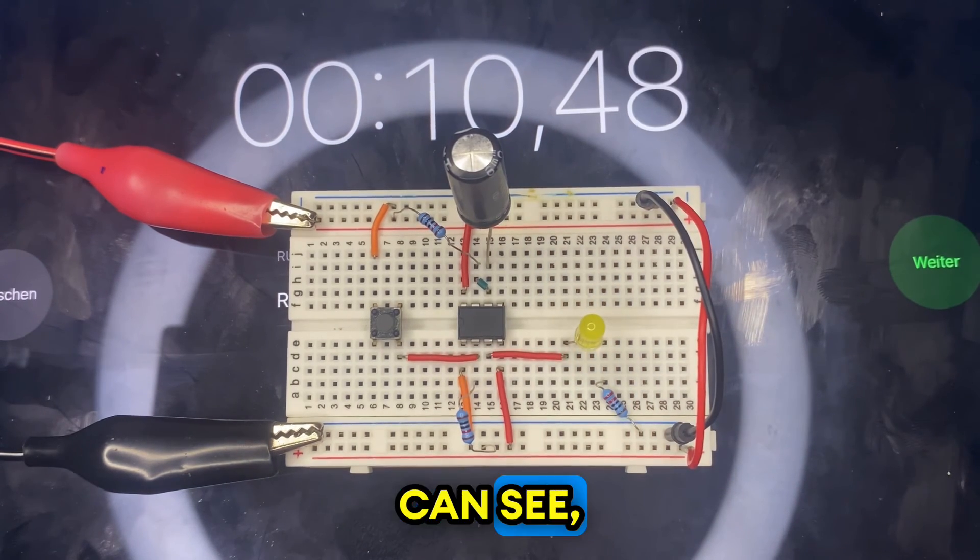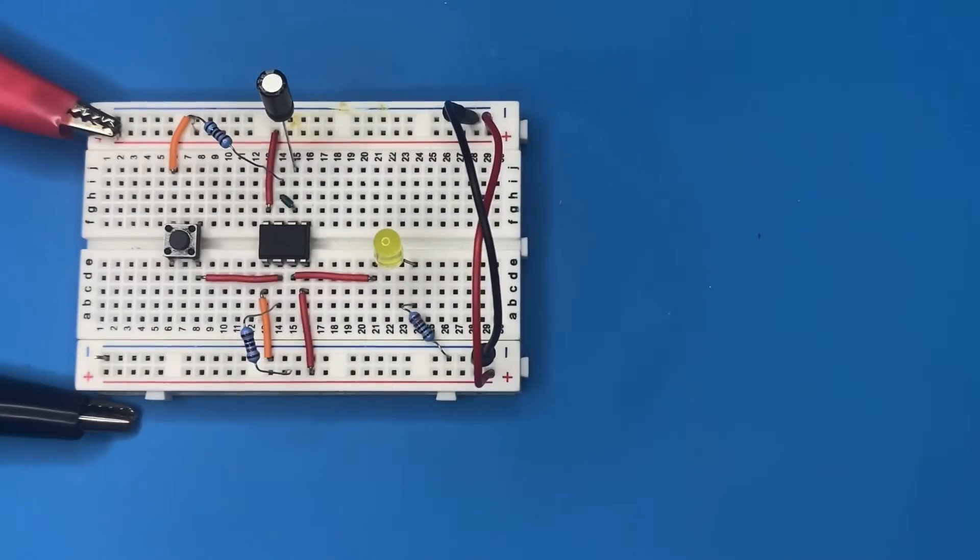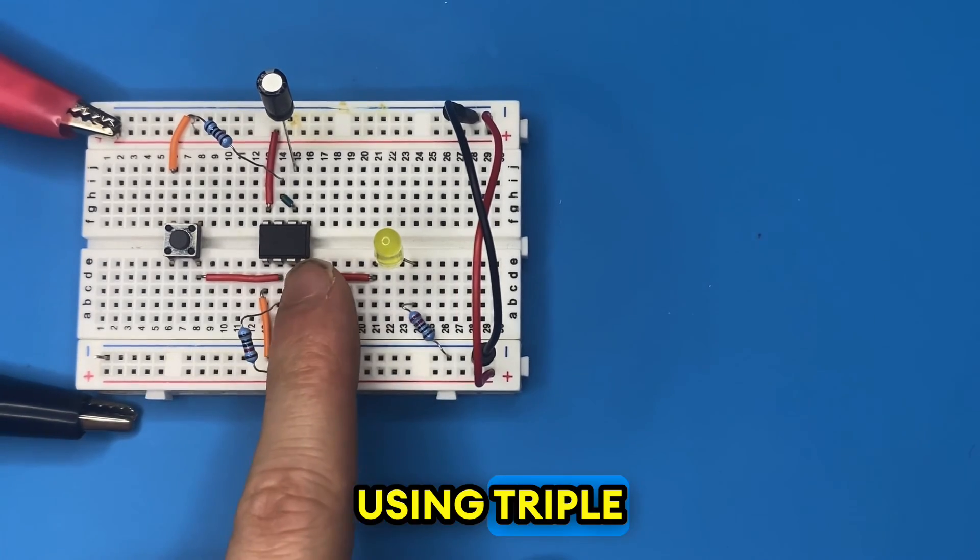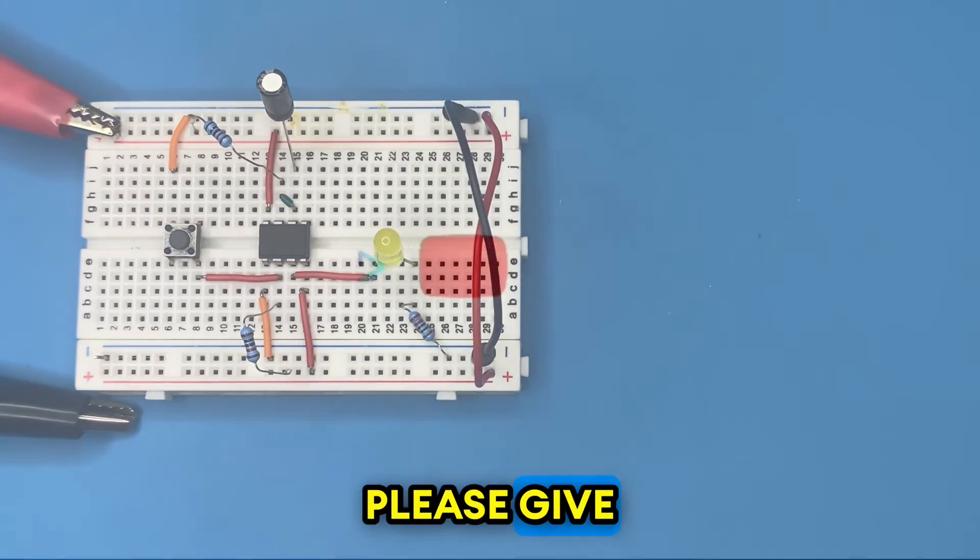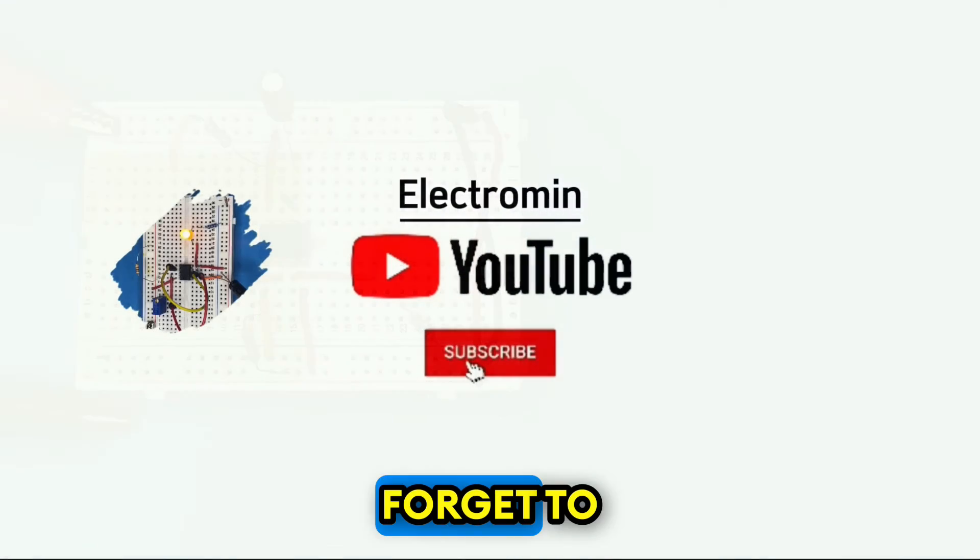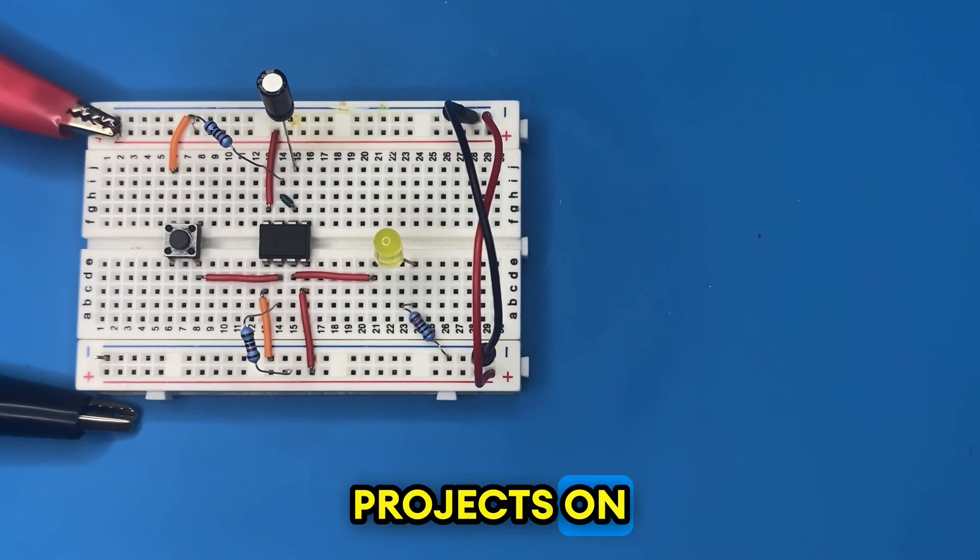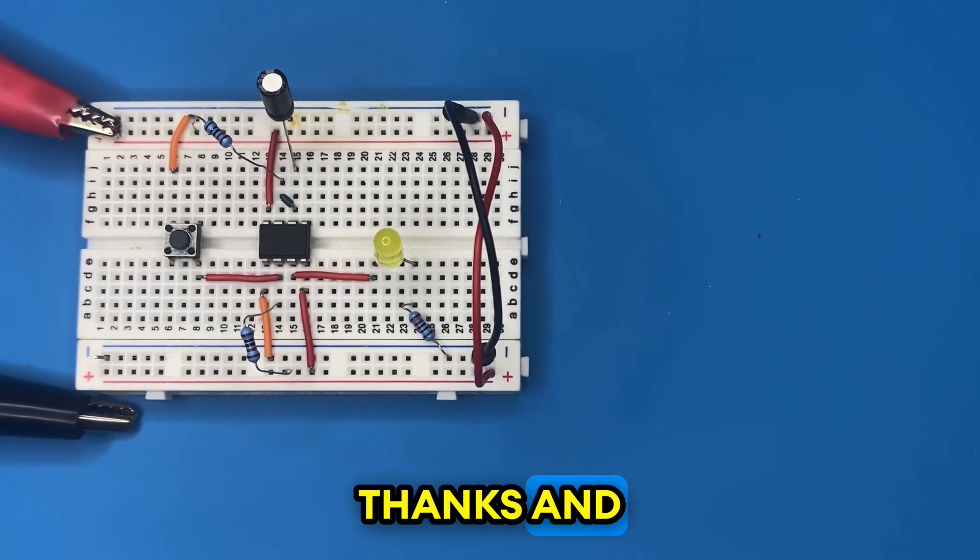As you can see, approximately 10 seconds and the circuit works perfectly. That was the whole idea with our monostable circuit using 555 timer IC on breadboard. If you enjoyed this video please give me a like and do not forget to subscribe to my YouTube channel. You can also find more than 60 breadboard projects on Electromine. Thanks and have a good day.